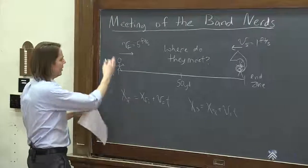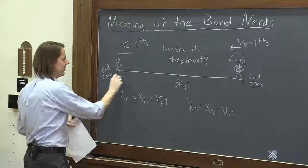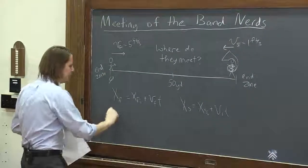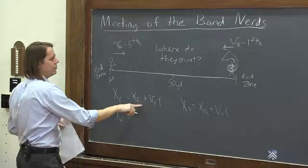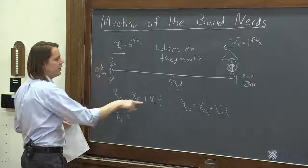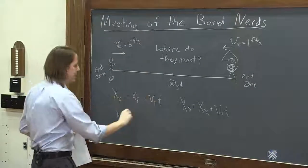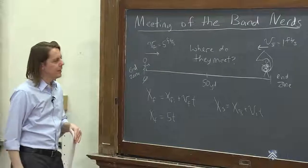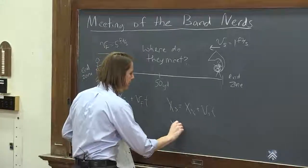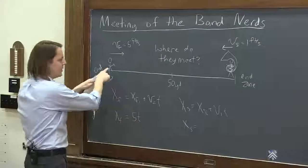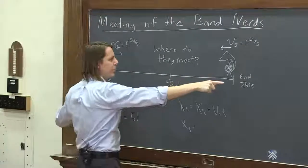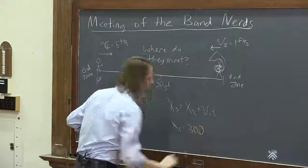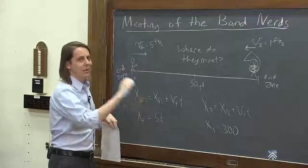All right, we could go ahead and put in numbers. If we consider this the origin for now, even though a football field is kind of strange, if this is the origin, then the fast person has no initial position, they're at zero, and they're going at 5t, if we're working in feet and seconds. And the slow person, they begin at an initial position of 100 yards, which is 300 feet.